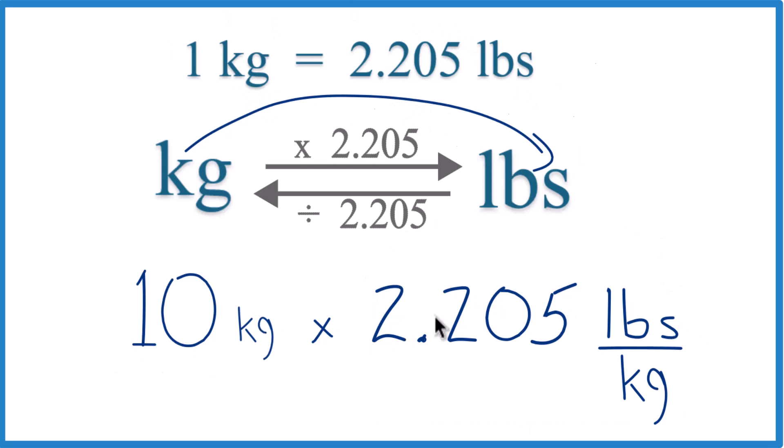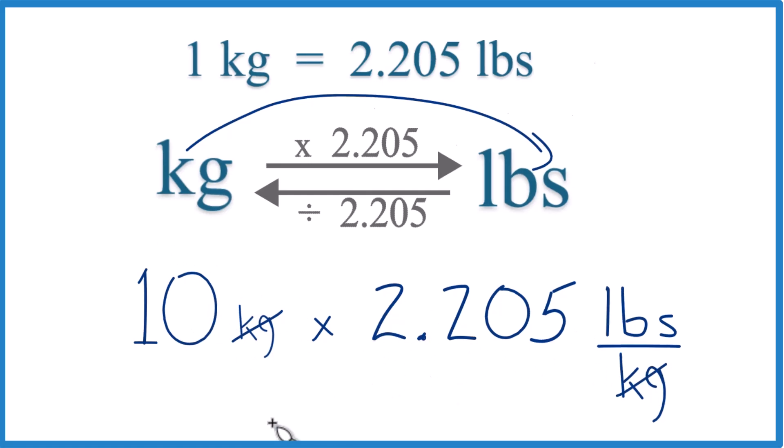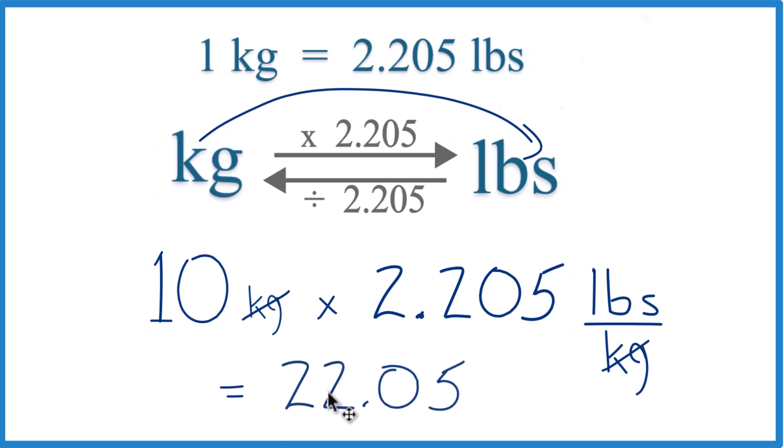Now when we multiply the top, we have kilograms here and then on the bottom here. So it's just 10 times 2.205 pounds. We end up with 22.05 in pounds. That's the only units that are left, so we have 22.05 pounds.